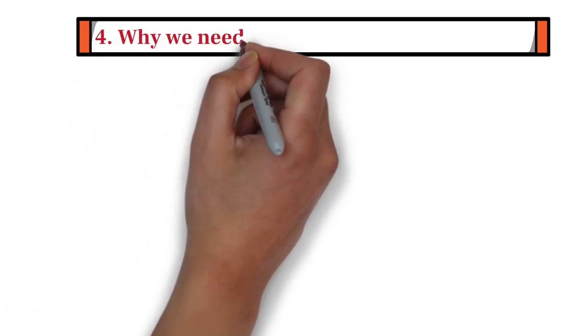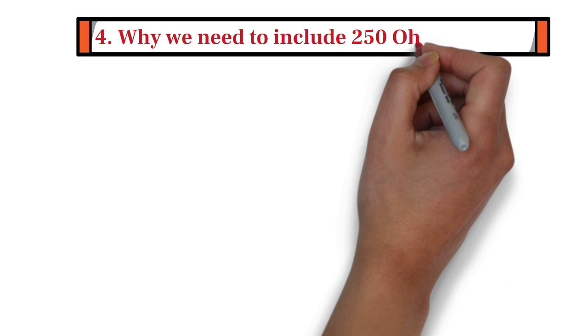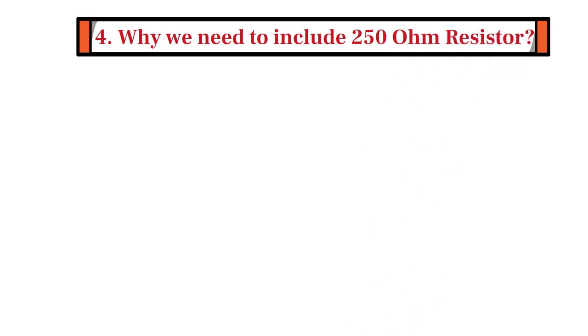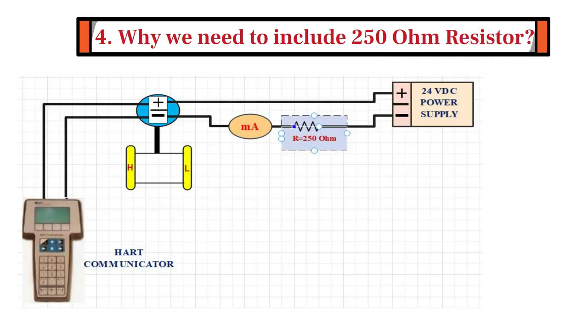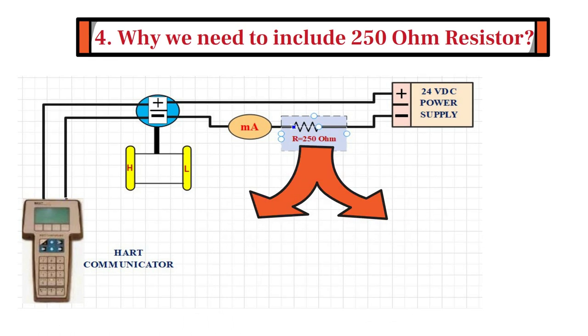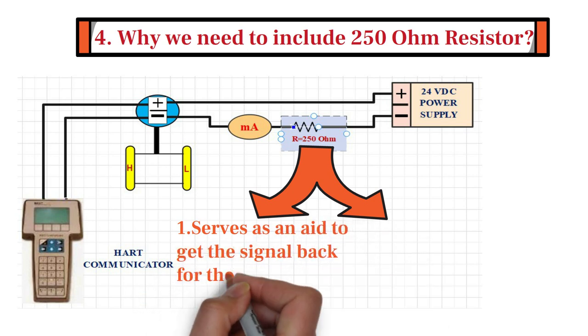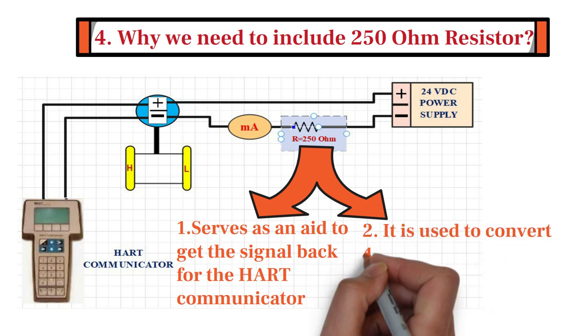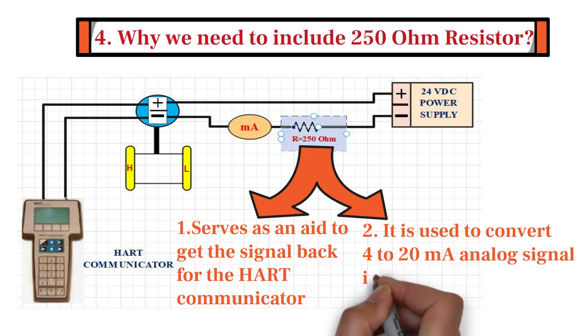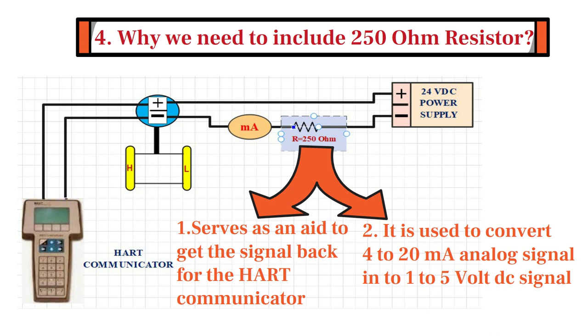Fourth and the most important question is, why do we need to include 250-ohm resistor in the loop while using HART protocol? There are mainly two reasons to include 250-ohm resistor in the loop. Firstly, 250-ohm resistor serves as an aid to get the signal back for the HART communicator. And secondly, 250-ohm resistor is also used to convert 4-20 mA analog signal into 1-5-volt DC signal, which is required for DCS and PLC.